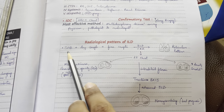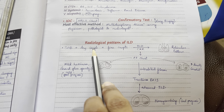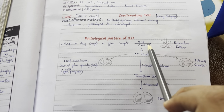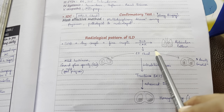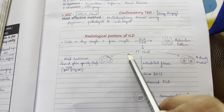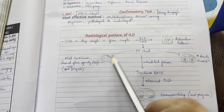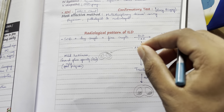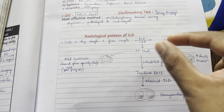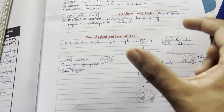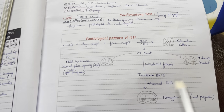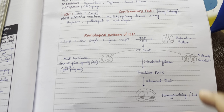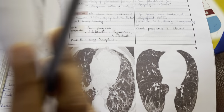Radiological patterns of ILD: SOB and dry cough due to fibrosis, fine crackles. Chest X-ray shows reticular pattern; CT shows ground-glass opacities or consolidation. Fibrosis pulls and dilates bronchioles causing traction bronchiectasis. Advanced ILD shows honeycombing.